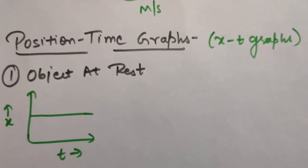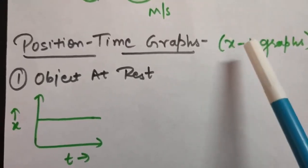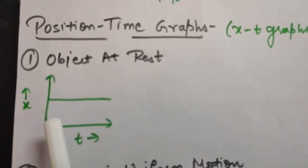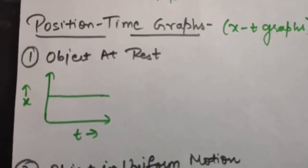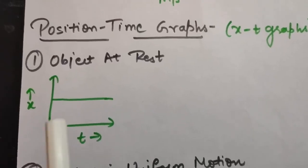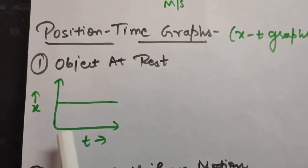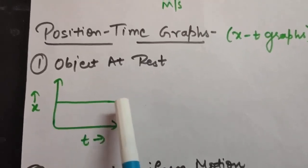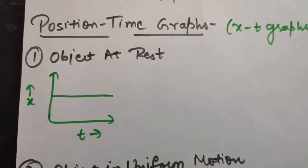Position-time graphs are also called x-t graphs, where x is position and t is time. For an object at rest, we plot distance on the y-axis and time on the x-axis. Since the position is not changing with time, the graph comes out parallel to the time axis.